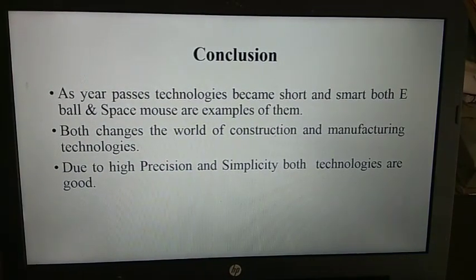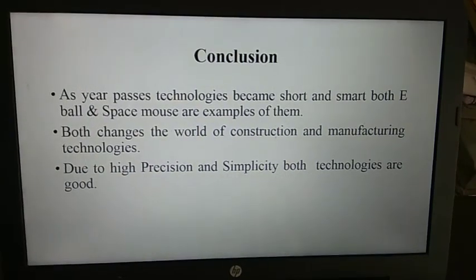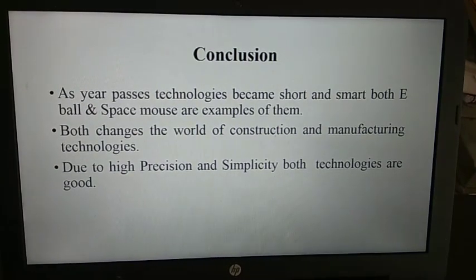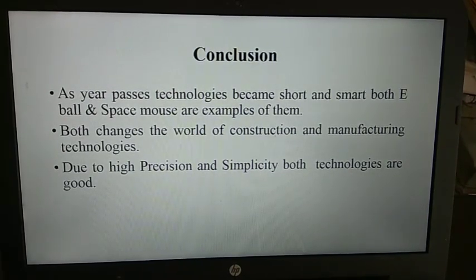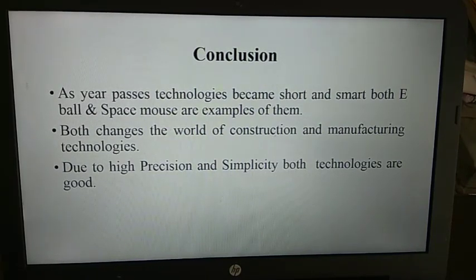In conclusion, as years pass, technologies become shorter and smaller. Both E-Ball and Space Mouse are examples of this trend. Both are changing the world of construction and manufacturing technologies. Due to their high precision and simplicity, both technologies are very promising.